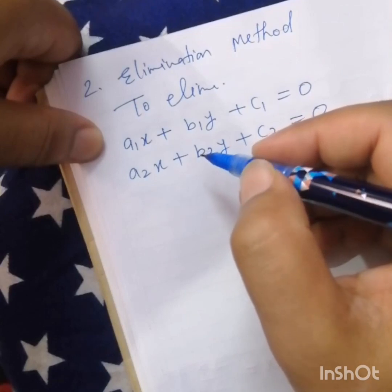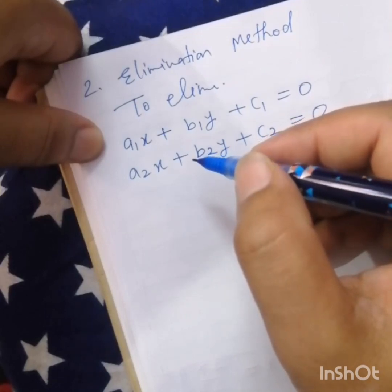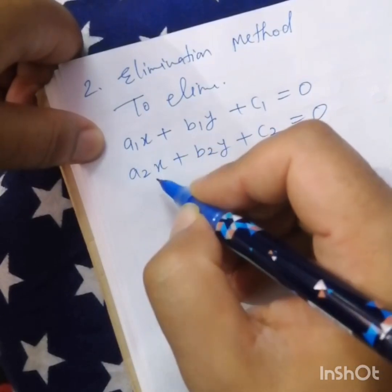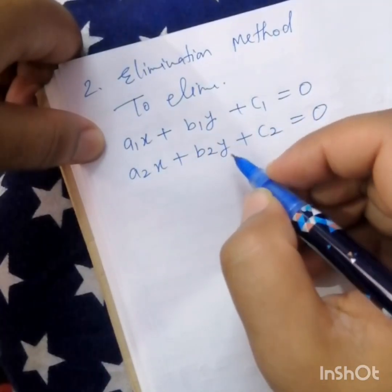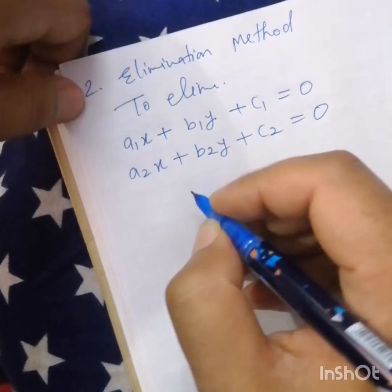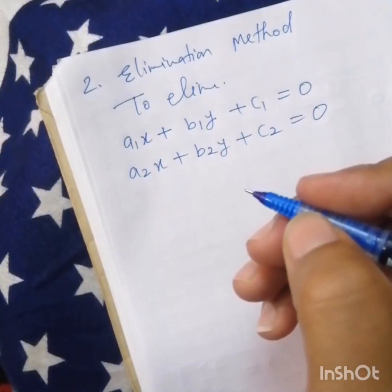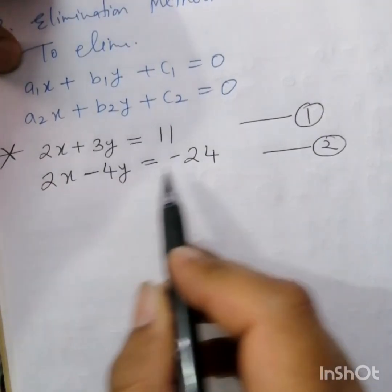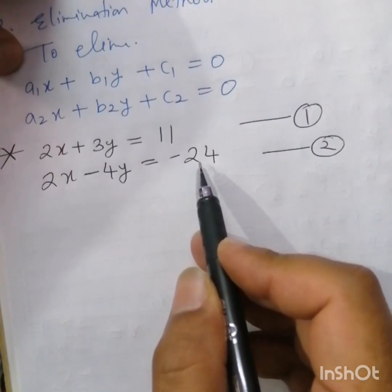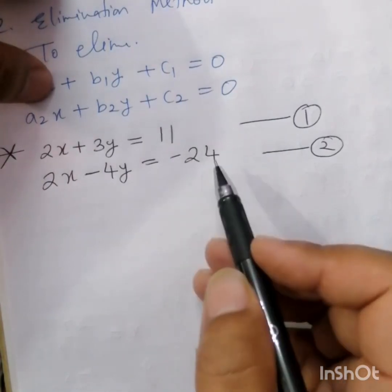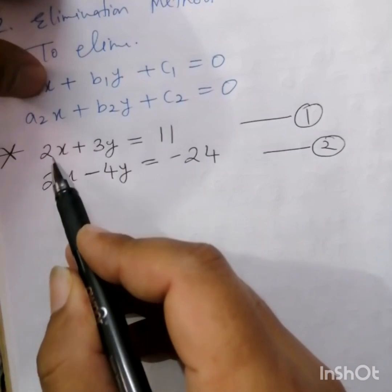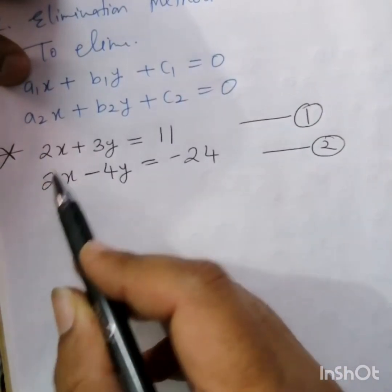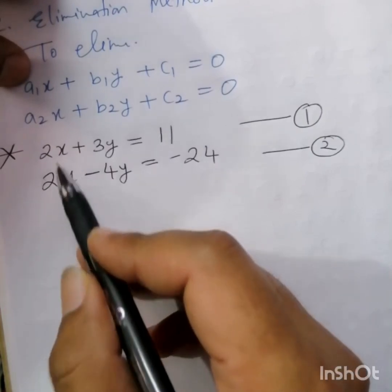The coefficient of x is a1 and a2; the coefficient of y is b1 and b2. By doing any multiplication or division, we have to make the coefficients equal — either for x or for y. For example, two equations: 2x plus 3y equals 11, and 2x minus 4y equals minus 24.